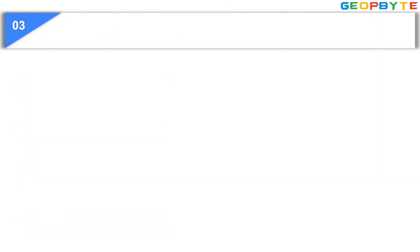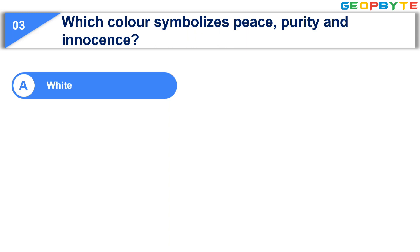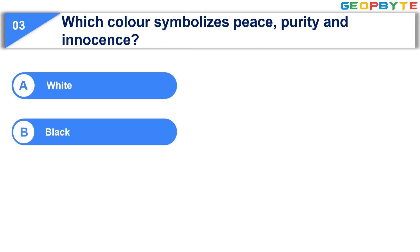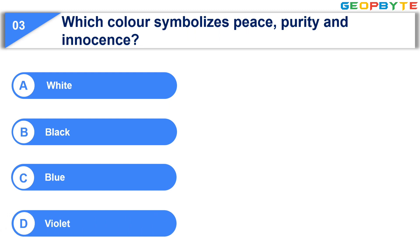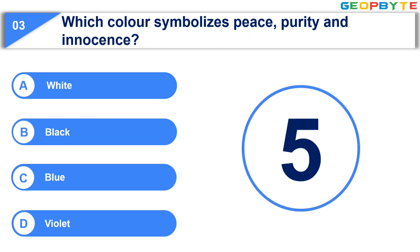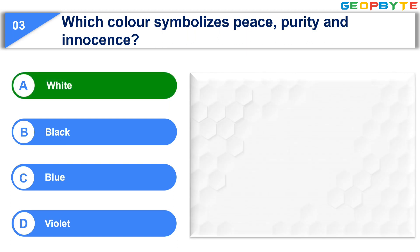The third question is: Which color symbolizes peace, purity and innocence? Option A, white. Option B, black. Option C, blue. Option D, violet. Your time starts now. Your time is up and the correct answer is Option A, white.